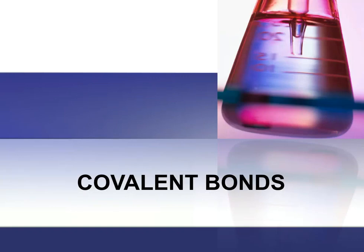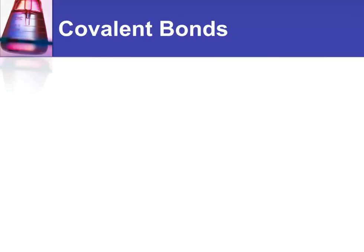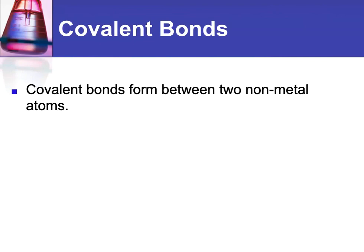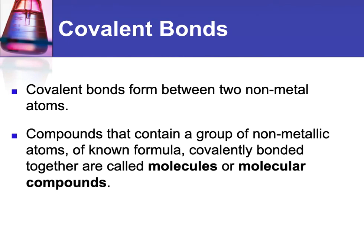This lesson is going to discuss covalent bonds. Covalent bonds typically form between two non-metal atoms. And if you have a compound that contains a group of non-metals, and they have a known formula, and they're covalently bonded together, the correct term for them is a molecule, or a molecular compound. So molecular compounds contain covalent bonds.